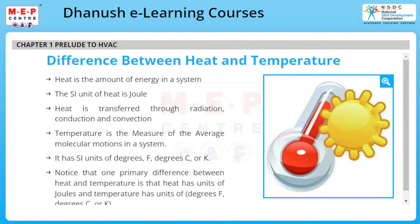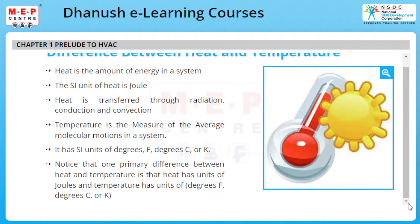Temperature is the measure of the average molecular motions in a system. It has SI units of degrees Fahrenheit, degrees Celsius, or Kelvin. Notice that one primary difference between heat and temperature is that heat has units of Joules and temperature has units of degrees Fahrenheit, degrees Celsius, or Kelvin.